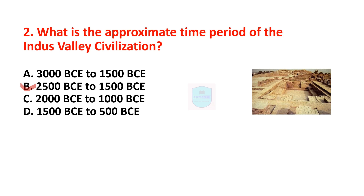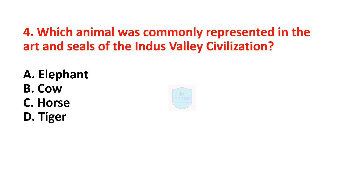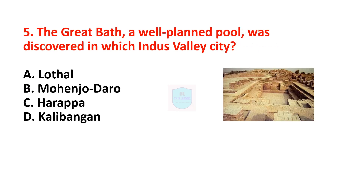Next question: what was the primary occupation of the people in the Indus Valley Civilization? Correct answer is agriculture. Agriculture was the primary occupation. Next question: which animal was commonly represented in the art and scenes of the Indus Valley Civilization? Correct answer is cow. Cow was commonly represented in the art and scenes.